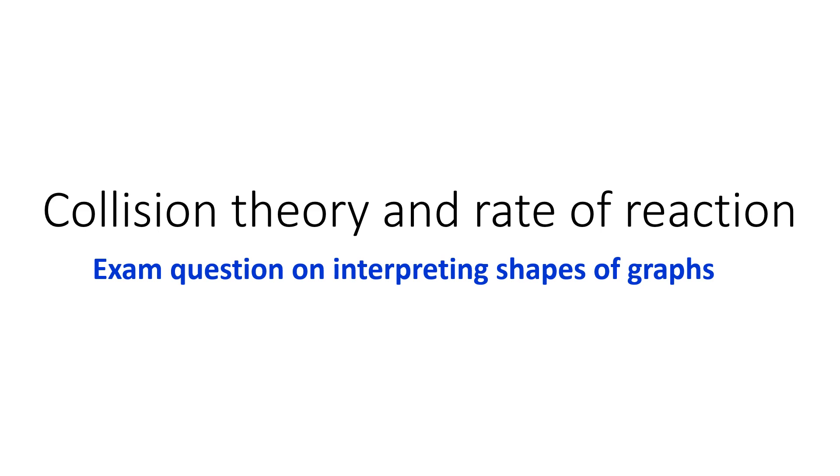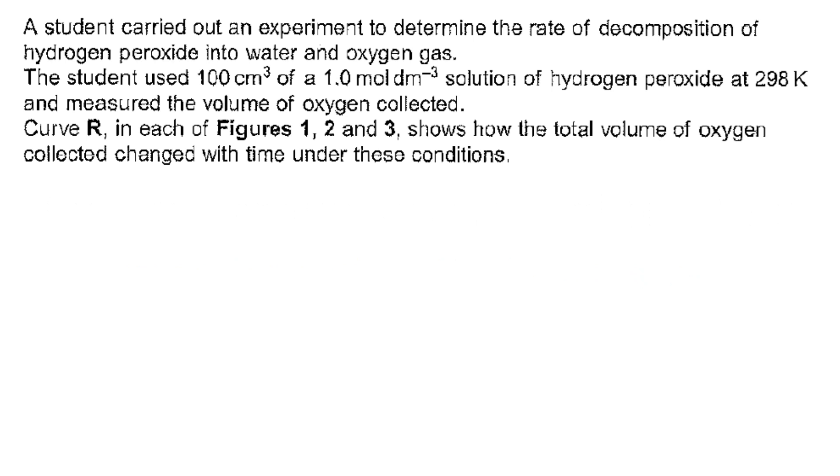Hi, and welcome to this clip looking at the effect of collision theory and rate of reaction on the shape of graphs. The first part of the question gets you to think about an experiment to determine the rate of decomposition of hydrogen peroxide into water and oxygen gas. It tells you what the student used in terms of volume and concentration of hydrogen peroxide and the temperature at which the experiment was carried out. They measured the volume of oxygen collected.